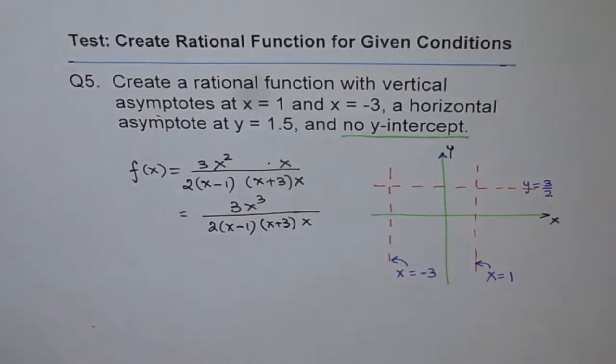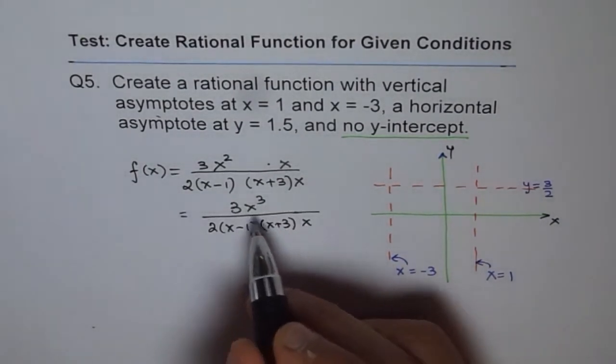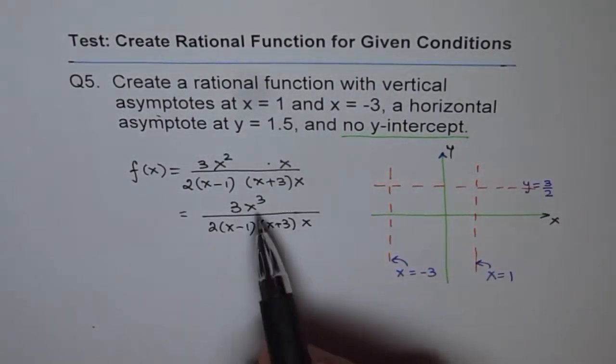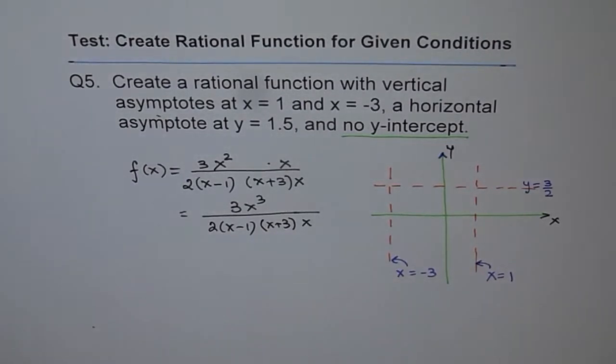So that becomes the equation of our function. See now, we have a hole at x equals 0. And degree of numerator and denominator is exactly the same. So that is how we develop these kinds of equations.